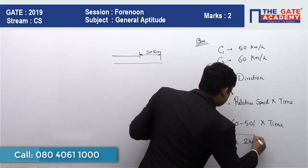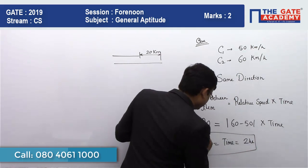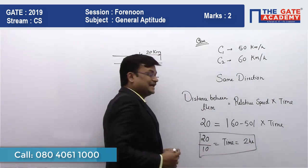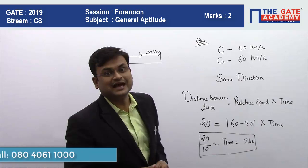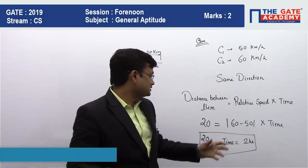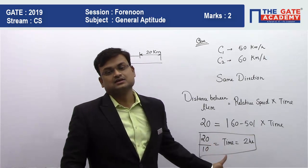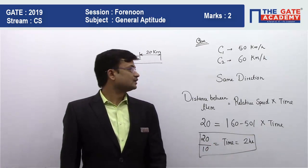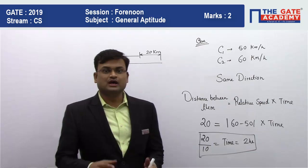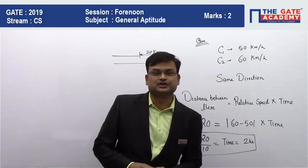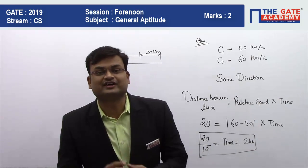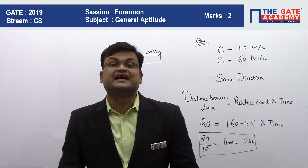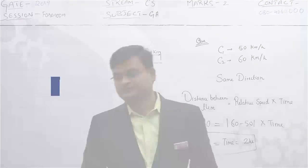Solving this, time equals distance divided by relative speed, which gives time as 2 hours. So this was a very simple question. Hope you have understood the solution. Do not forget to like the video and share it with your friends. Thank you.